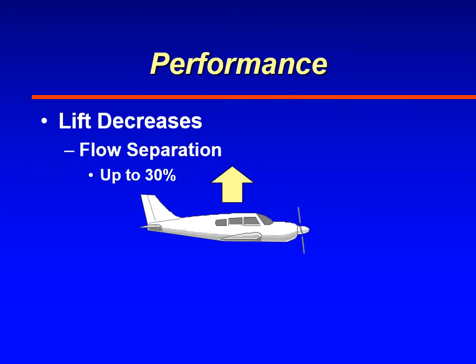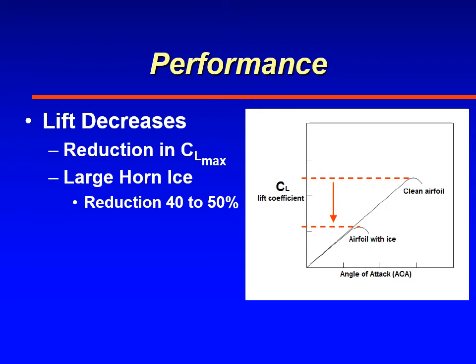Lift was affected approximately 30 percent. When the airfoil started to accumulate ice, the air did not flow smoothly over the airfoil, resulting in a reduction in lift. The reduction in lift was a result of the reduction in the coefficient of lift. The maximum coefficient of lift decreased quite significantly. They had the biggest loss of lift when the aircraft was carrying quite a bit of ice — specifically horn ice, typically glaze or clear type ice — where they found that lift decreased between 40 to 50 percent.